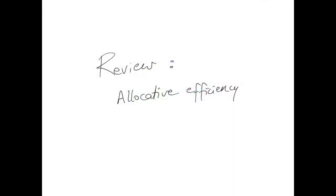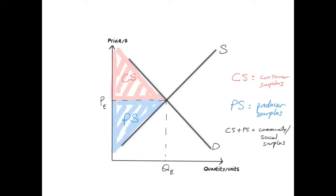In this video I'm going to do a very quick review of the concept of allocative efficiency and how it connects to equilibrium in competitive markets. In order to understand allocative efficiency, we need to understand consumer surplus, producer surplus, and social or community surplus.